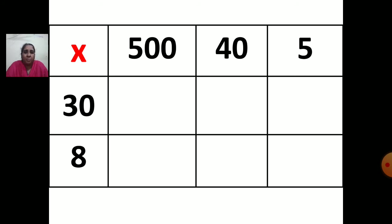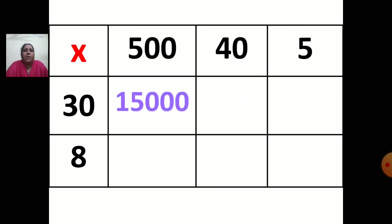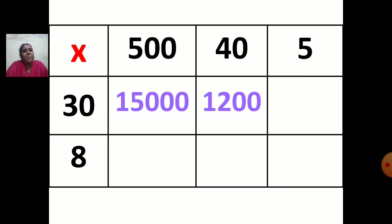After writing the breakup of both numbers, now multiply. First: 500 multiplied by 30 — 5 threes are 15, place 3 zeros — answer is 15,000. Next: 40 multiplied by 30 — 4 threes are 12, place 2 zeros (one from 40, one from 30) — answer is 1,200. Then: 5 multiplied by 30 — 5 threes are 15, place 1 zero — answer is 150.